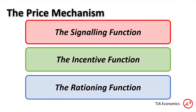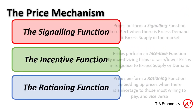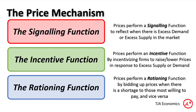So those are our three functions: the signalling function, the incentive function, and the rationing function. A quick recap — the signalling function: when there is excess demand or excess supply, it signals to agents in the market that this is the case. For example, producers will find that with excess demand they don't have enough to satisfy all consumers, or with excess supply not all of their product has been sold. That signals to them to change their prices. When prices do change, firms are either incentivised to produce more if the price has gone up, or to produce less if the price has gone down. And lastly, the rationing function: when prices go up or down, that will ration off the good or service to consumers who are willing to pay for it.